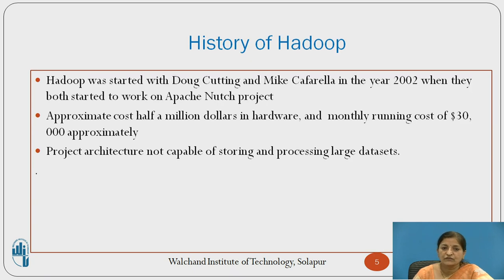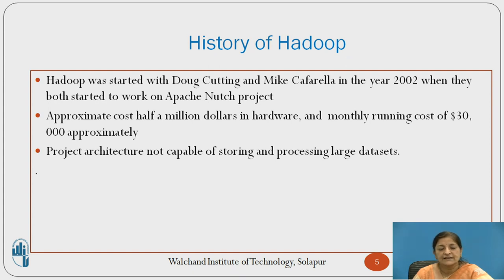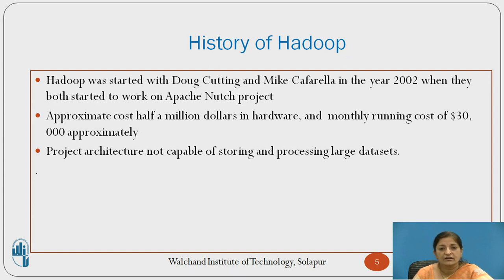If we see the history of Hadoop, it was first started by Doug Cutting and Mike Cafarella in the year 2002 when they both started to work on the Apache Nutch project. This project was designing a search engine that was able to index billions of web pages — nearly a huge data set. But approximately the cost of such a system was half a million dollars in hardware, along with a monthly running cost of approximately 30,000 dollars.